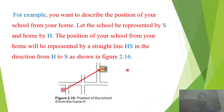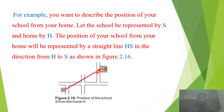مثال کے طور پہ آپ اپنے school کی position کو اپنے گھر سے describe کرنا چاہتے ہیں۔ School کو S سے represent کیا گیا ہے اور home کو H سے۔ School کی position بتانے کے لیے سب سے پہلے ایک reference point choose کرنا ہوگا اور وہ reference point آپ کا home ہوگا۔ اگر کوئی reference point choose نہیں کریں گے تو ہم اپنے school کی position کو describe نہیں کر سکیں گے۔ ہم نے H سے S تک ایک line کھینچی جو کہ HS ہے۔ اس line کے آگے arrow ہے جو بتاتا ہے کہ school، home سے ایک specific direction میں locate کر رہا ہے۔ کسی بھی چیز کی position بتانے کے لیے ضروری ہے کہ کوئی reference point یا origin معلوم ہو۔